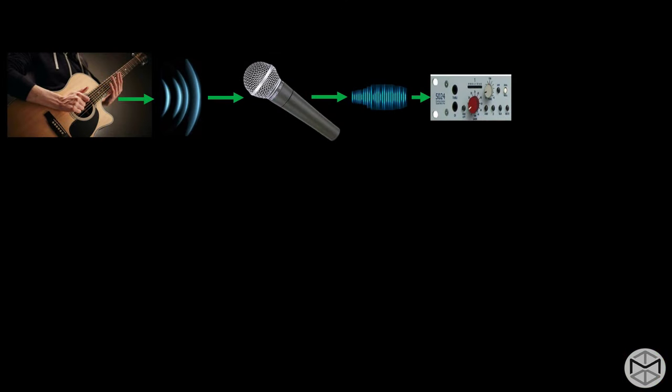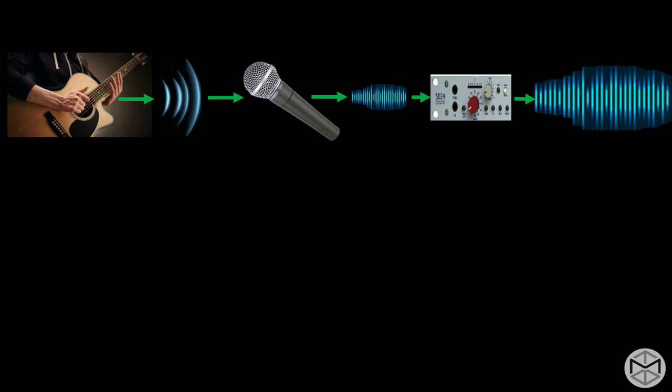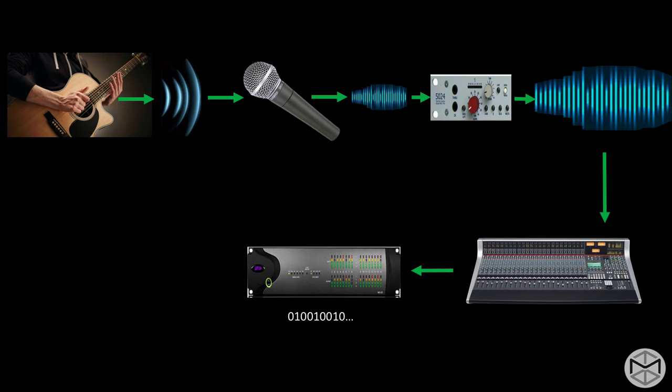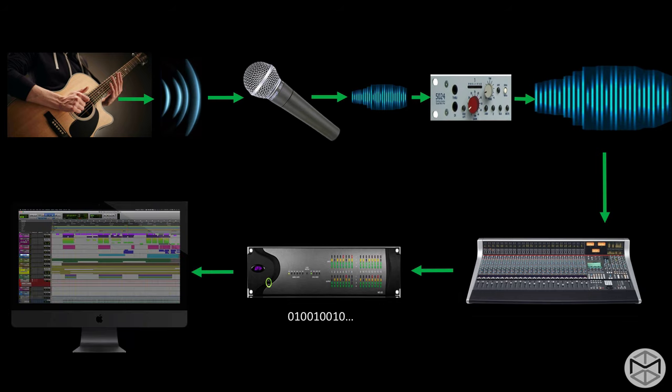Through our pre-amplifier, we're going to be pre-amplifying — in other words, setting up a proper level of our signal prior to hitting our converters. Our converters, HDIO converters, will convert the sound from a voltage to binary digits — zeros and ones — based on the sample rate and bit depth we have chosen for our project. Now the question is: how loud should I adjust my pre-amplifier in order to get the best gain structure within my recording?